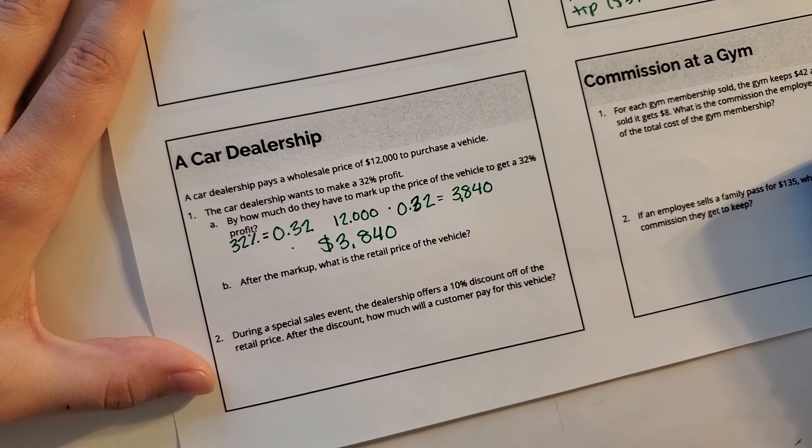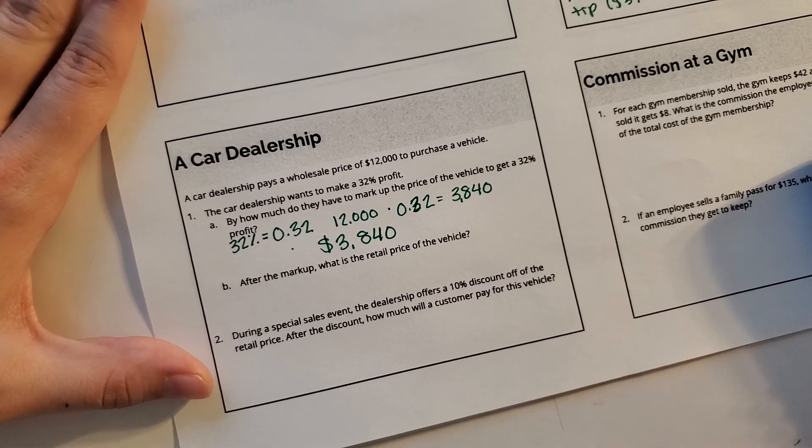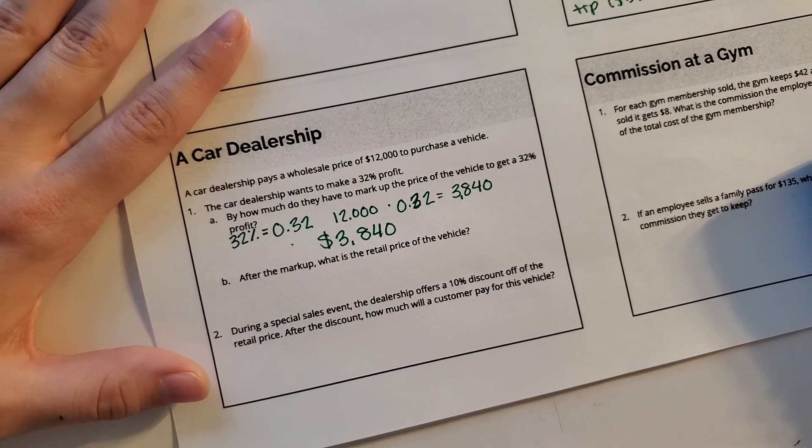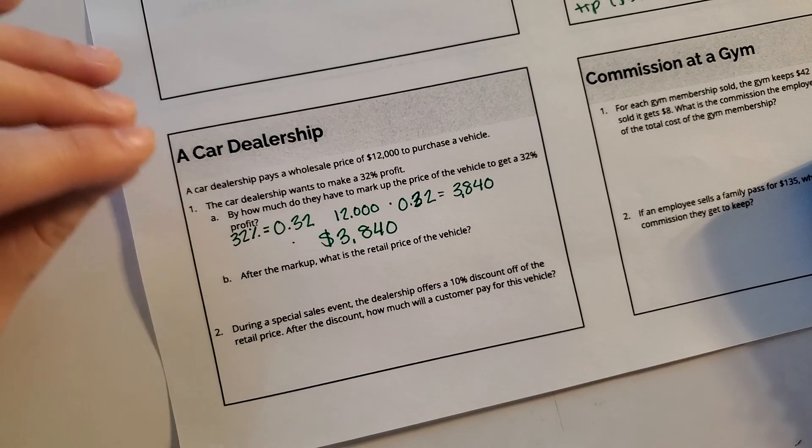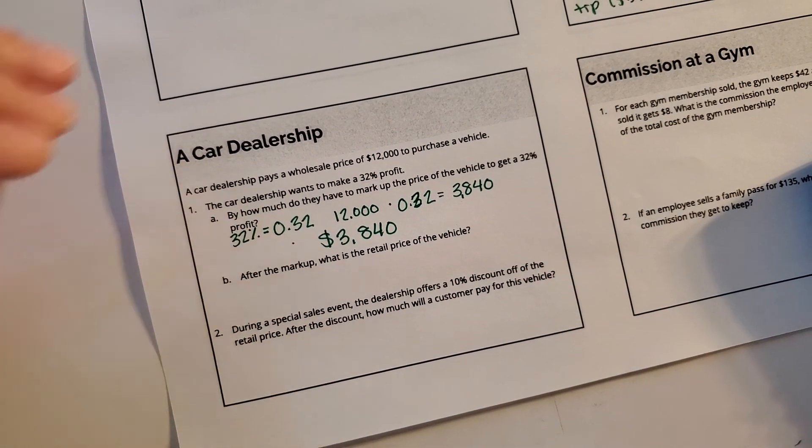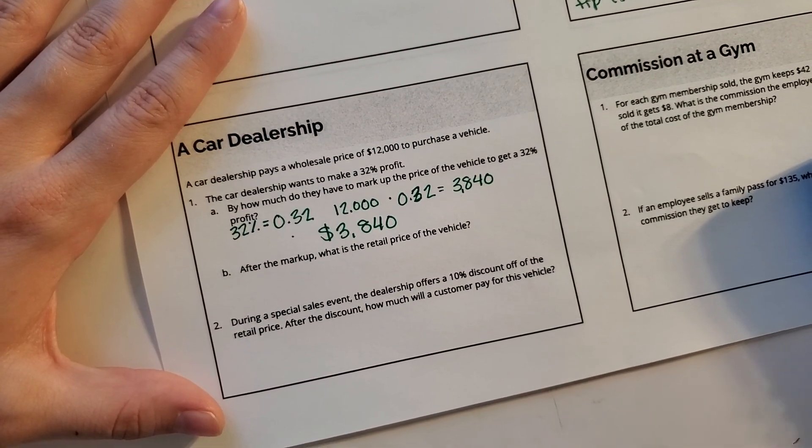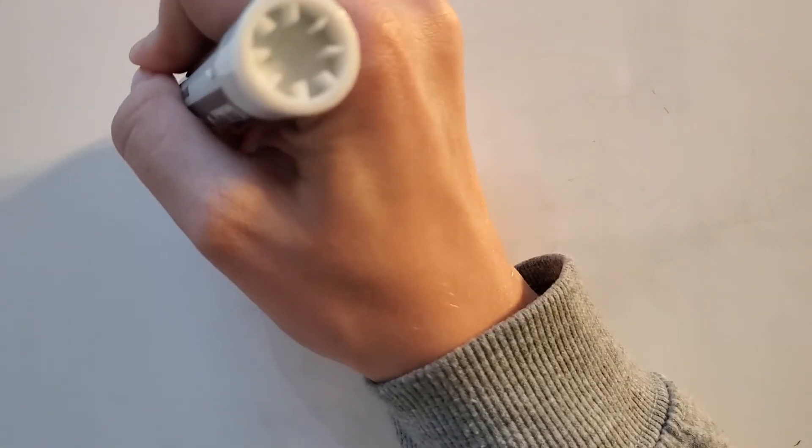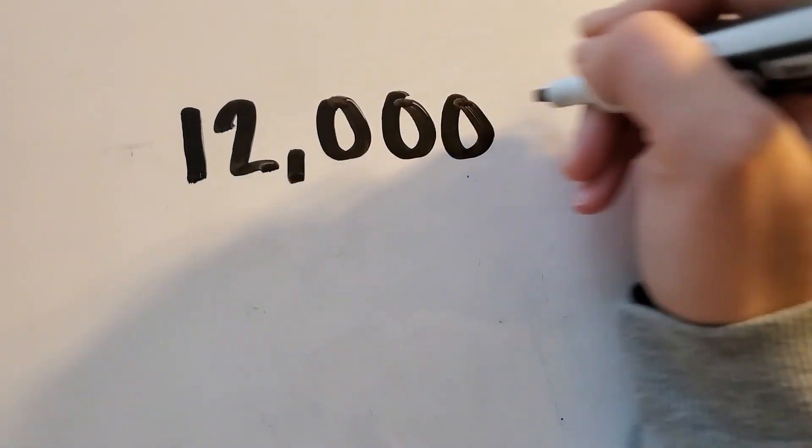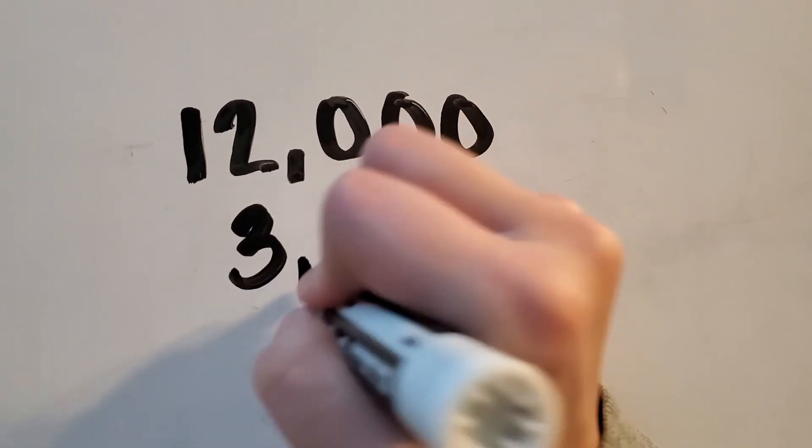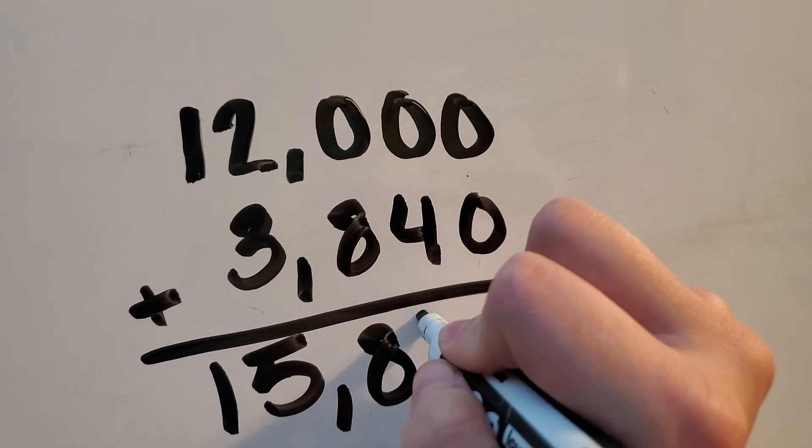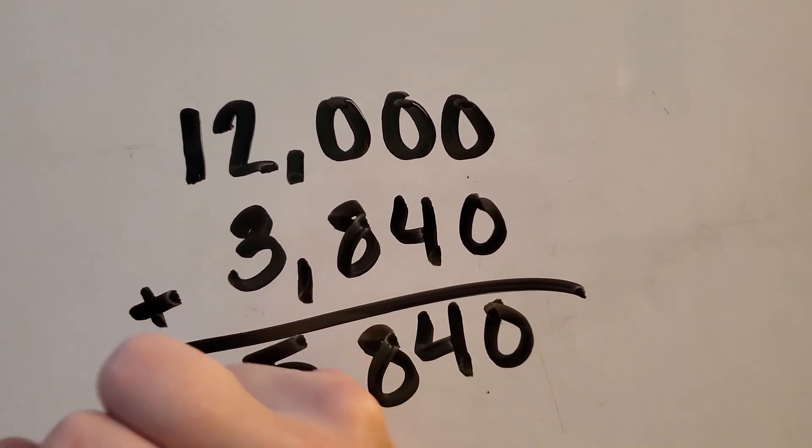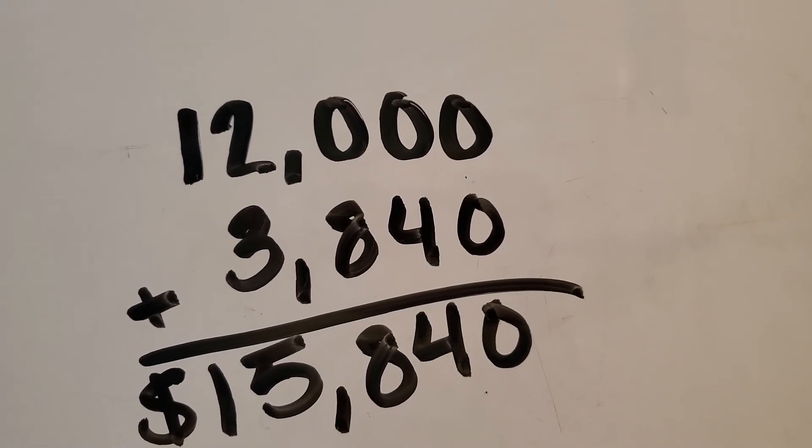So they need to mark up the car by $3,840. So now after the markup, what is the retail price of the vehicle? Including the $3,840 and the $12,000 they already bought it for, I want to know the sticker price. The first way, I take the $12,000 that they bought it for, that's our 100%, and I add the $3,840 to get $15,840.